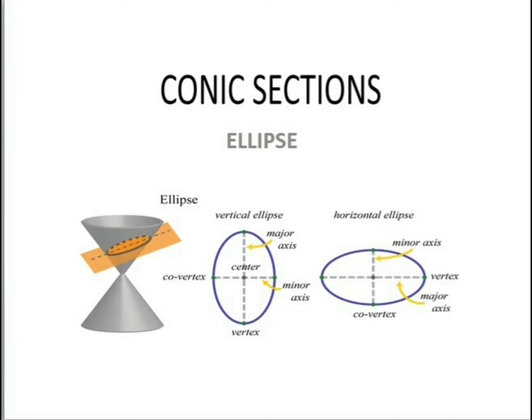In this video we are going to see about ellipse. We obtain different kinds of conic sections depending on the position of the intersecting plane with respect to the cone and by the angle made by it with the vertical axis of the cone. Here beta is the angle made by the intersecting plane with the axis of the cone. When beta lies between alpha and 90 degrees, the section is an ellipse.